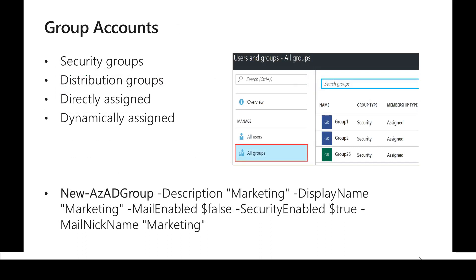The disadvantage of managing users with permissions like role-based access control is that we have to assign permissions to users again and again whenever users leave or join the organization. That's a management nightmare, which is why we need groups. With groups, we can assign users to a group and assign permissions at the group level, so all group-based permissions automatically apply to new users added to the group.